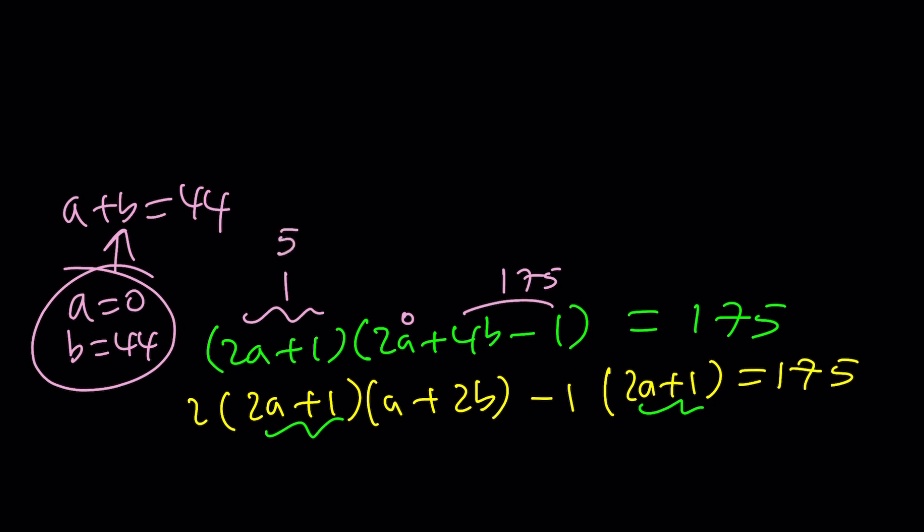If 2a + 1 is 5, then that means a is equal to 2, so this is going to be 4. And this is going to be 175 divided by 5, which is 35, which means 4b - 1... Actually, it's supposed to be the whole thing.